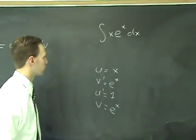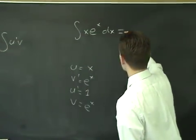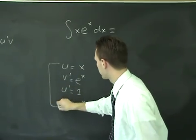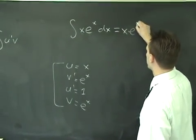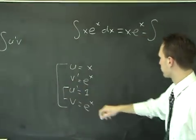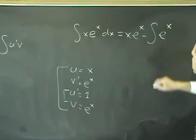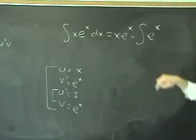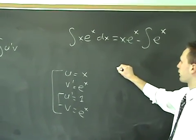So then according to the parts formula, this equals uv, which is x e to the x, minus the integral of 1 times e to the x, e to the x. So it's a success because we wind up with something easier, and that's easy to carry out.